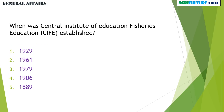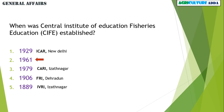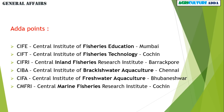In the general affairs section: when was the Central Institute of Fisheries Education established — 1929, 1961, 1979, 1906, 1889, or 1861? In 1929 ICAR was established; in 1979 Central Avian Research Institute at Izatnagar was established; in 1906 FRI Dehradun; in 1889 Indian Veterinary Research Institute at Izatnagar. Key fisheries institutes: Fisheries Education Institute in Mumbai, Fisheries Technology Institute in Kochi, Inland Fisheries Institute in Barrackpur, Brackish Water Aquaculture Institute in Chennai, Freshwater Aquaculture Institute in Bhubaneswar, and Marine Fisheries Research Institute in Kochi.